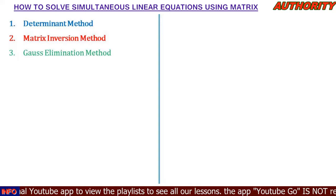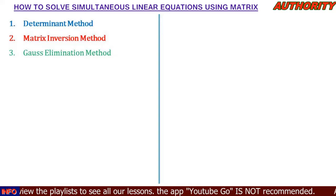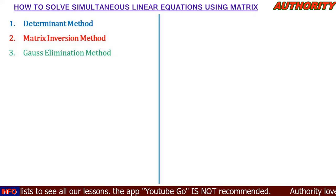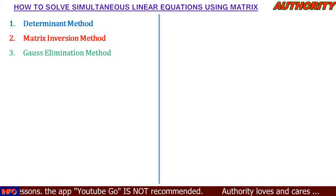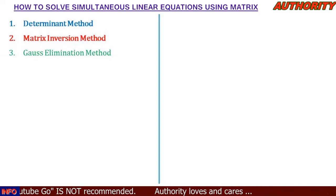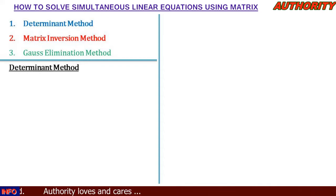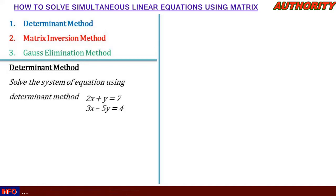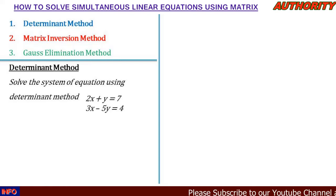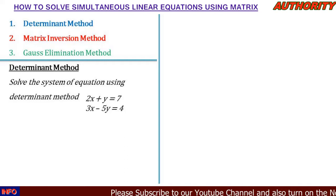We're going to take these one after the other, so please follow this video gradually to grasp all that you need. Now let's consider the first method, which is the determinant method. Let's look at this question: solve the system of equations using the determinant method. First equation: 2x + y = 7. Second equation: 3x - 5y = 4.